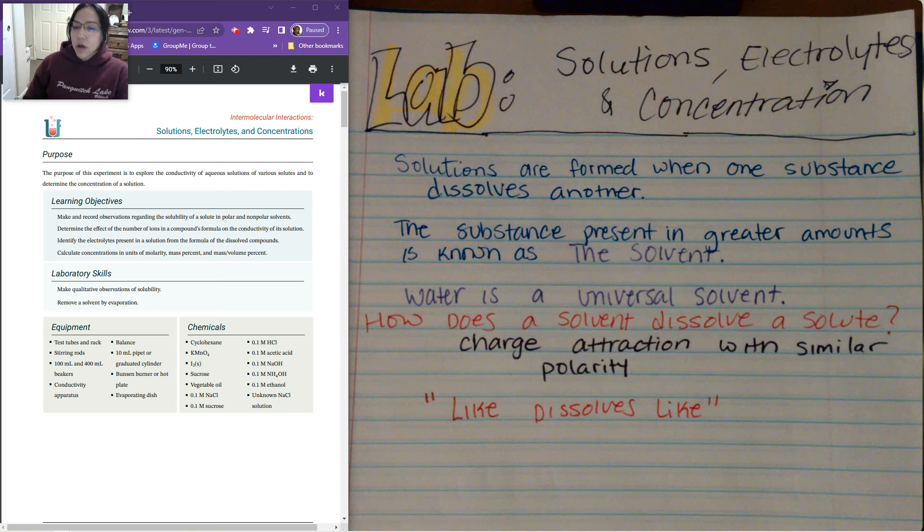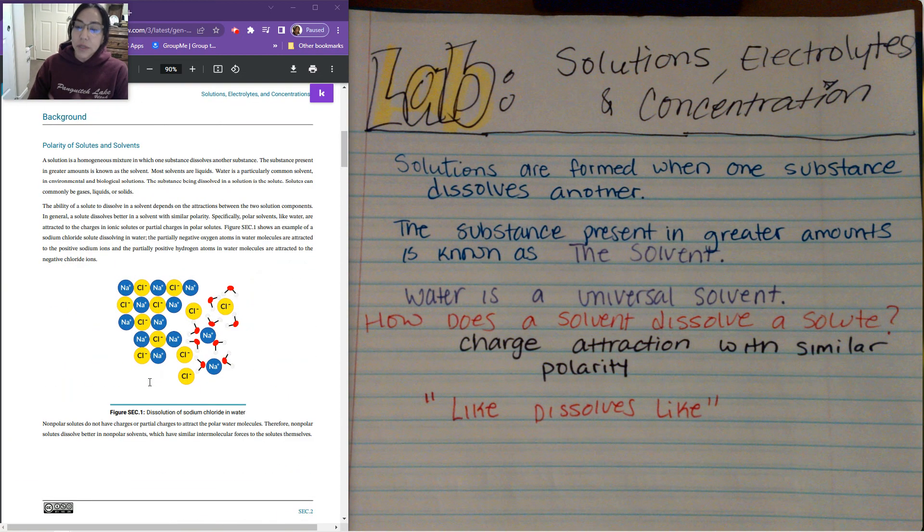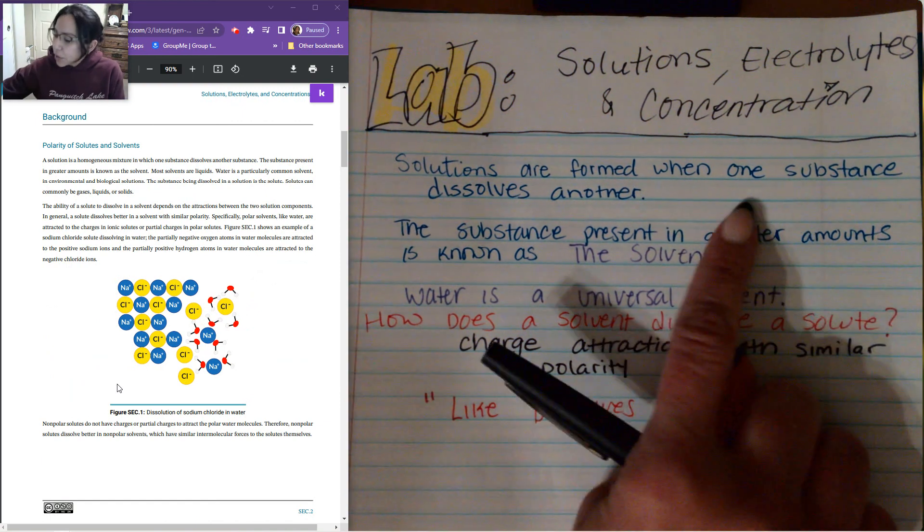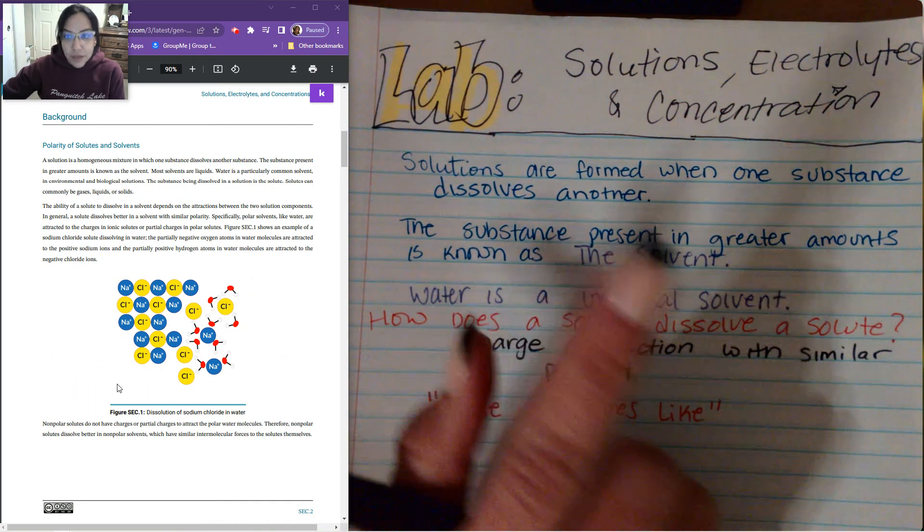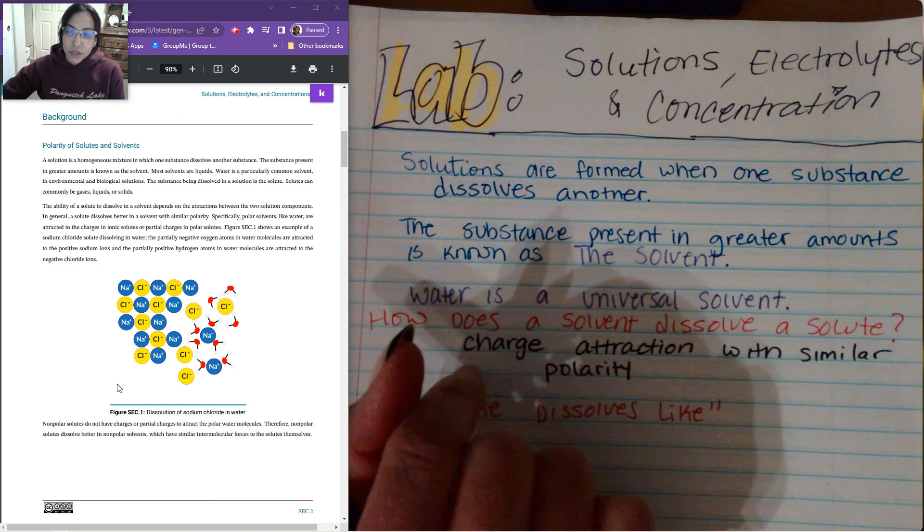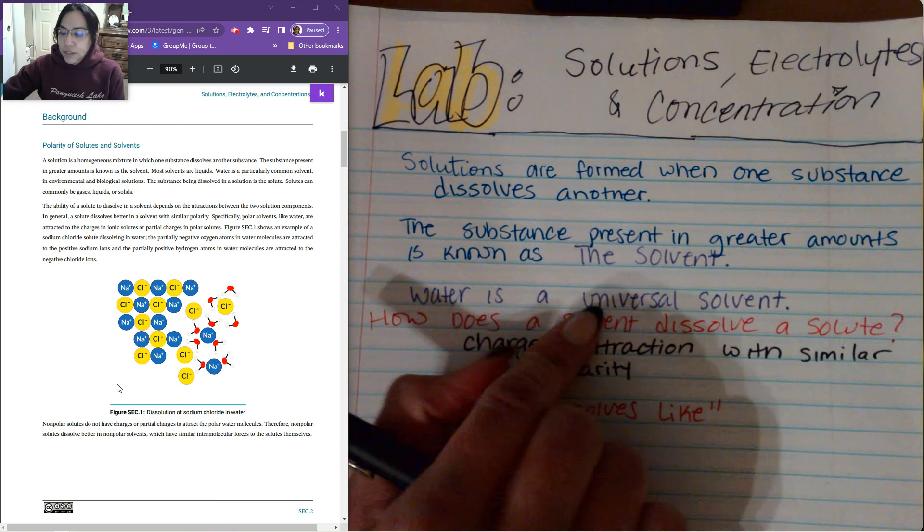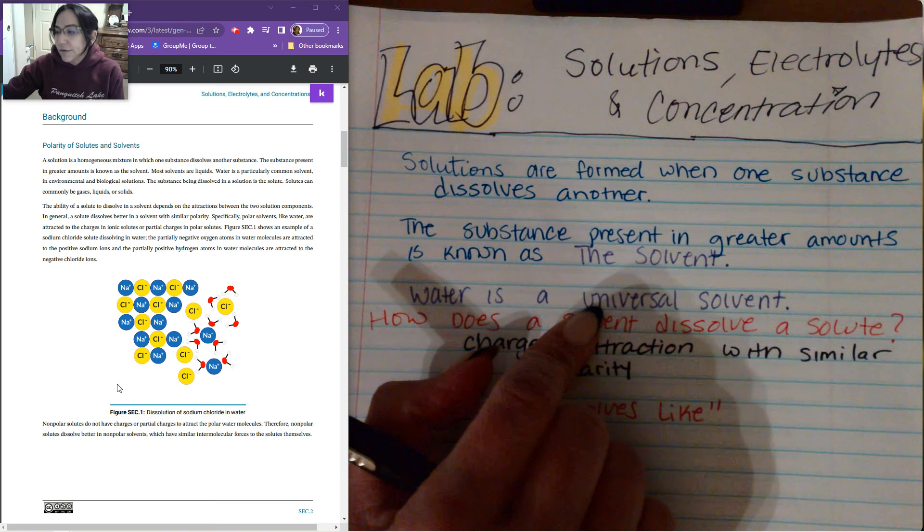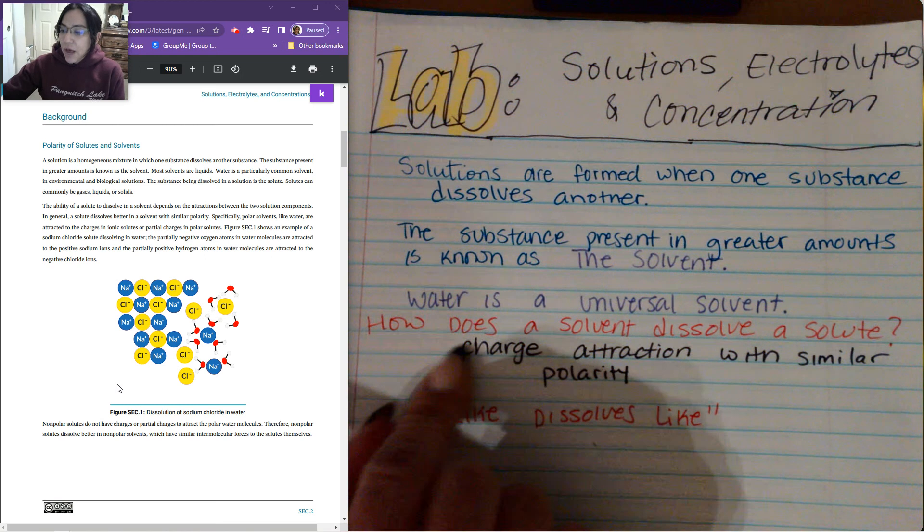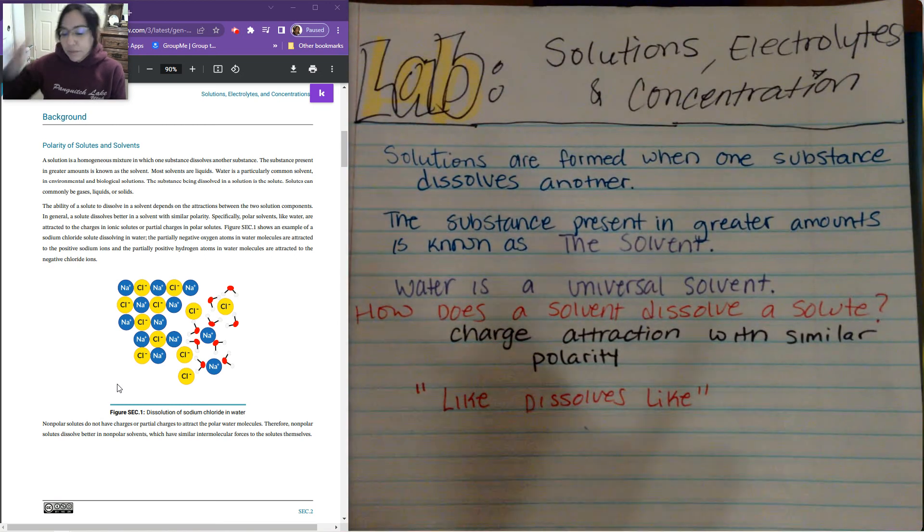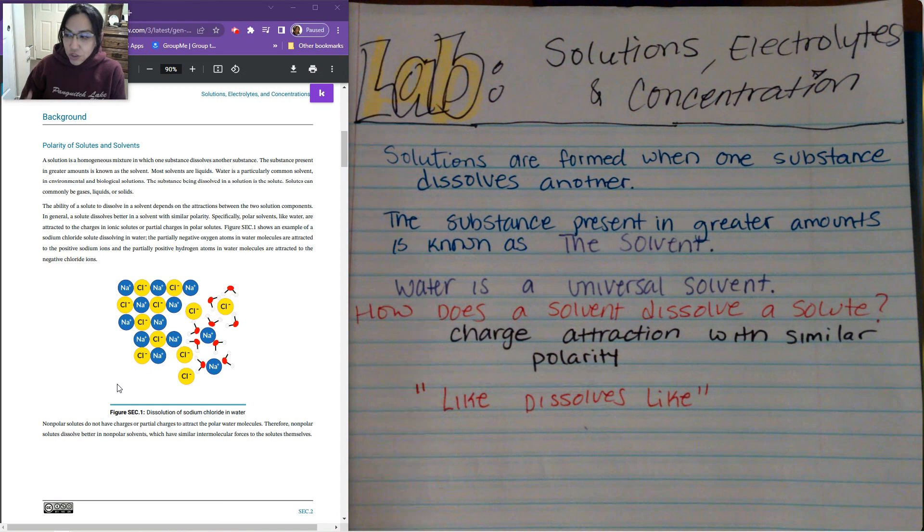So to start off in our lab, we're going to talk about polarity of our substances. A solution is something that's formed when one substance dissolves another substance. The substance present in greater amounts is known as the solvent. The other one is known as the solute. Water is considered a universal solvent. That means it dissolves practically everything that is polar especially. So how does the solvent dissolve a solute? Well, it's based off the charge, the attraction of the charge, and they have to have similar polarities. So the key word here is like dissolves like.